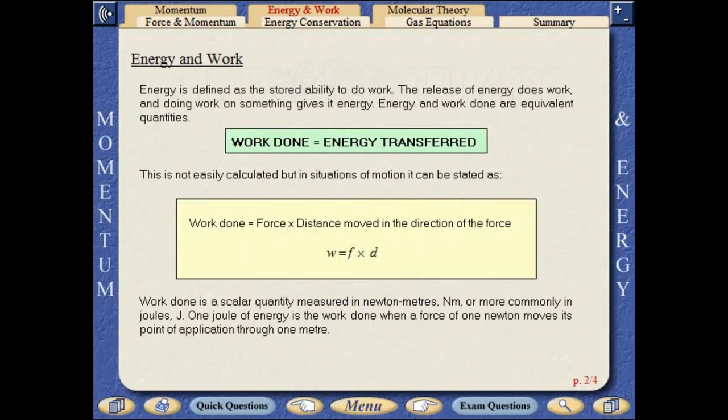Energy is defined as the stored ability to do work. The release of energy does work and doing work on something gives it energy. Energy and work done are equivalent quantities. Work done is equal to energy transferred.